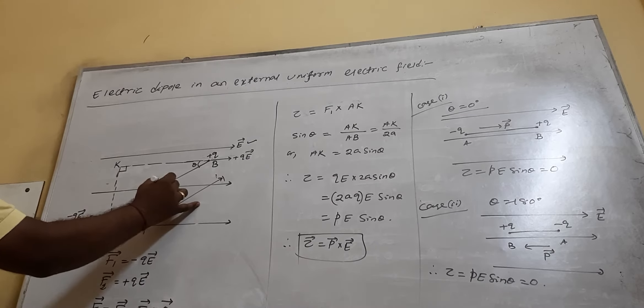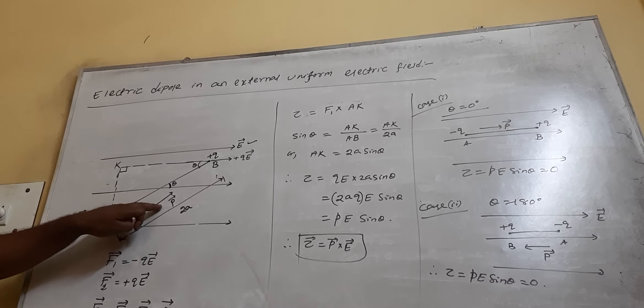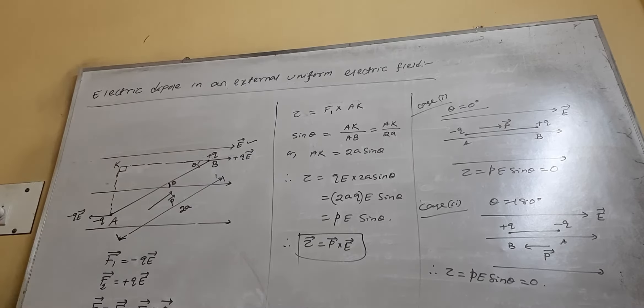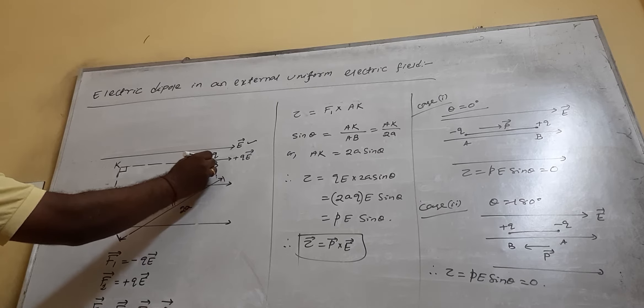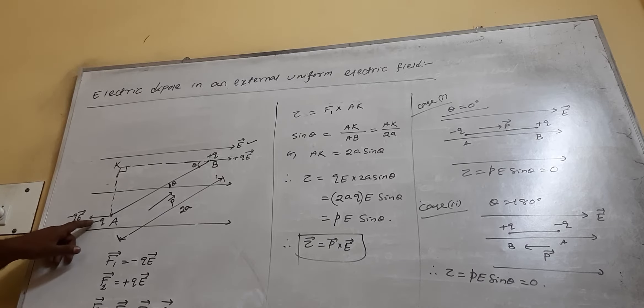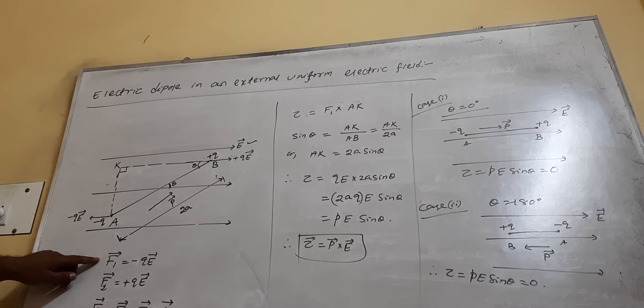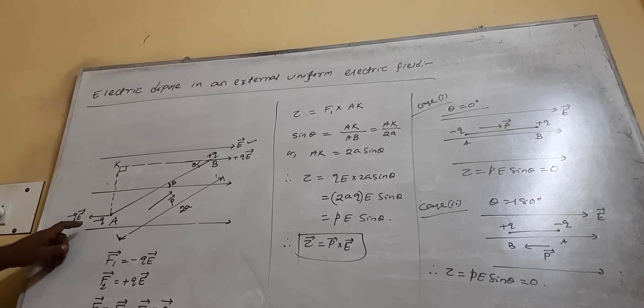which indicates that the electric field is uniform. Here, we have placed an electric dipole at A and B. At A, you have charge minus Q; at B, you have charge plus Q. The direction of the electric dipole moment vector is from A to B. We have taken theta as the angle between the dipole moment vector and the electric field vector.